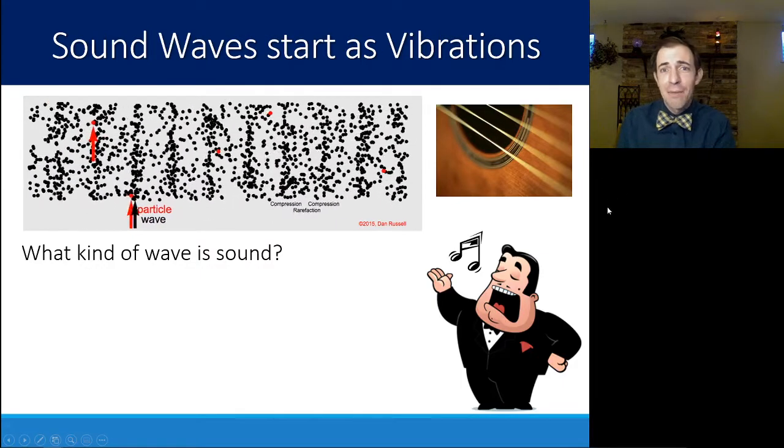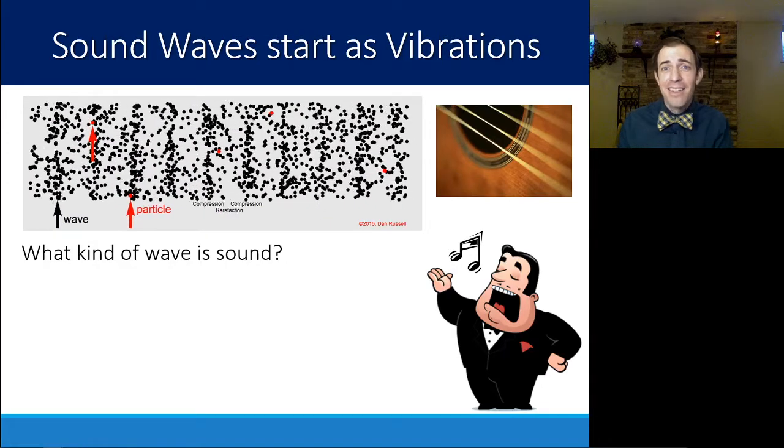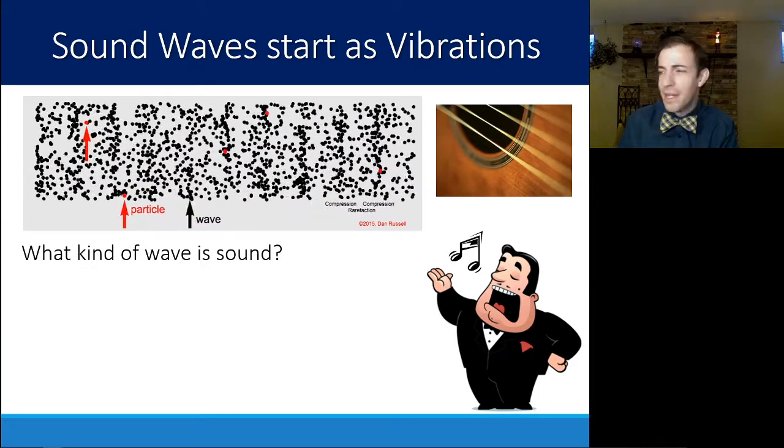A guitar string can vibrate. Other ways that you can vibrate air through an instrument could be like the buzzing of lips in a brass instrument or the reed moving back and forth in a woodwind.